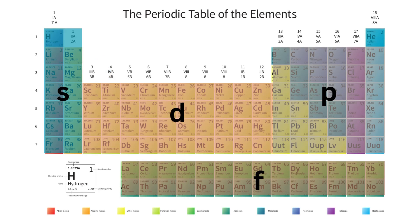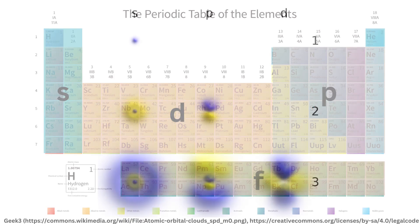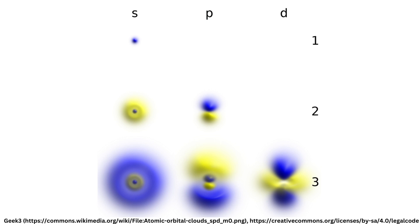Now that we've seen how rows and columns relate to atomic size, let's take a closer look at the orbital blocks — namely the S, P, D, and F blocks. This is where things really get interesting. Orbitals are regions within an atom where electrons hang out. Each orbital has a specific shape and can only hold a certain number of electrons.